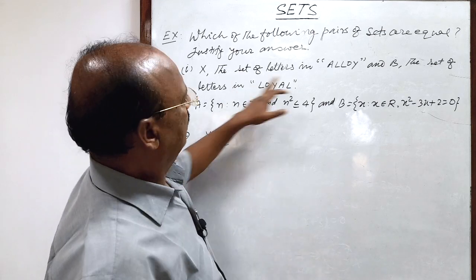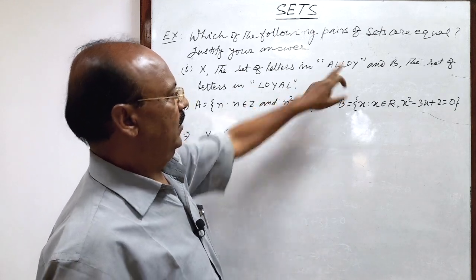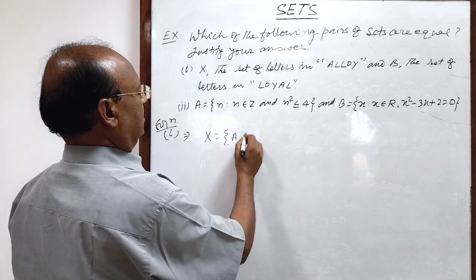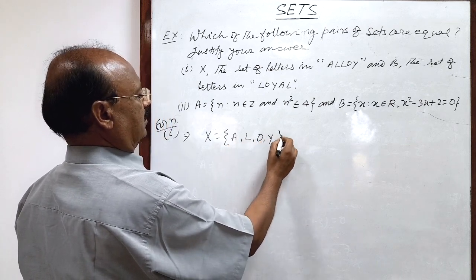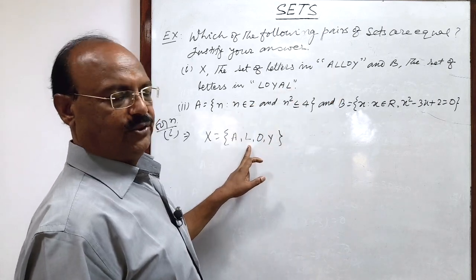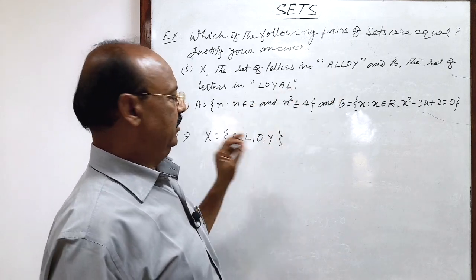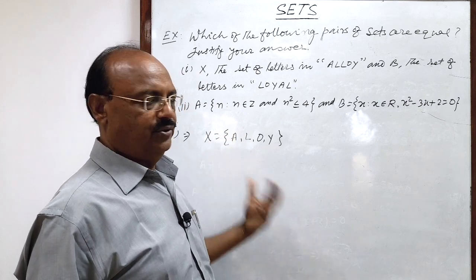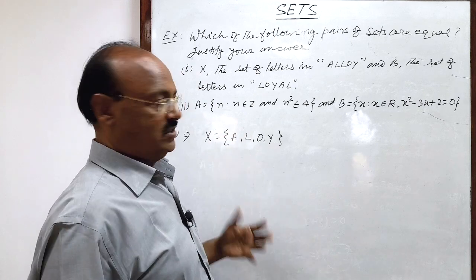Set X has elements, letters from ALLOY: A, L, O, Y. We should not write L twice here because you know that we write only once, we do not repeat the letters or members.